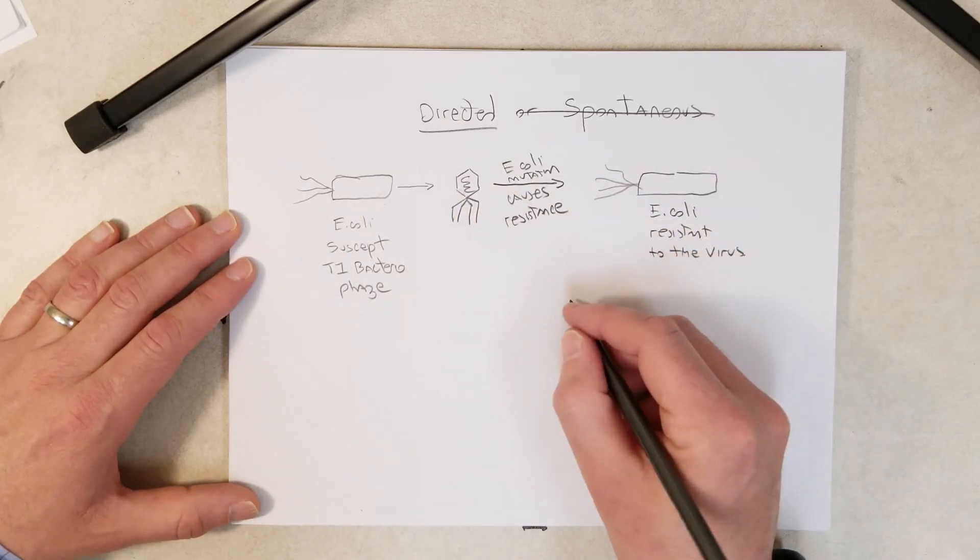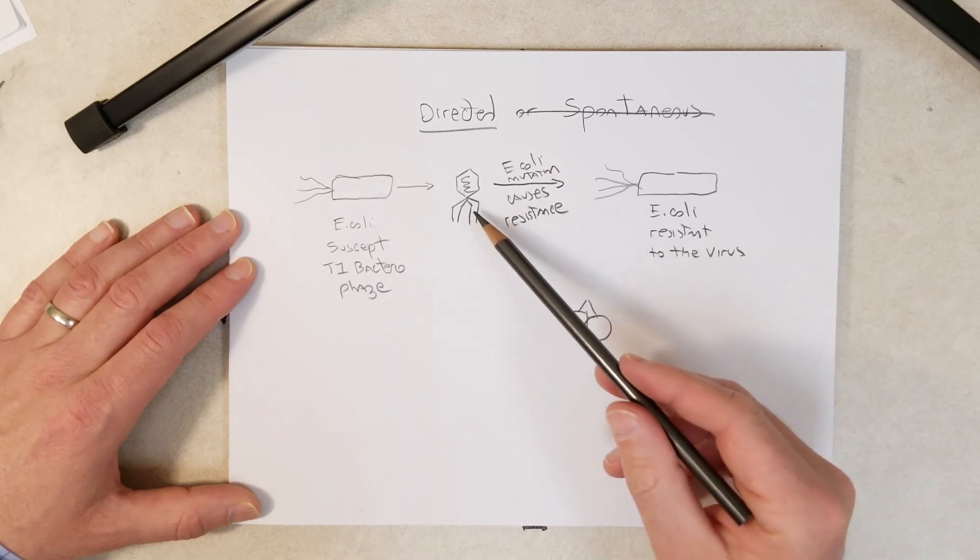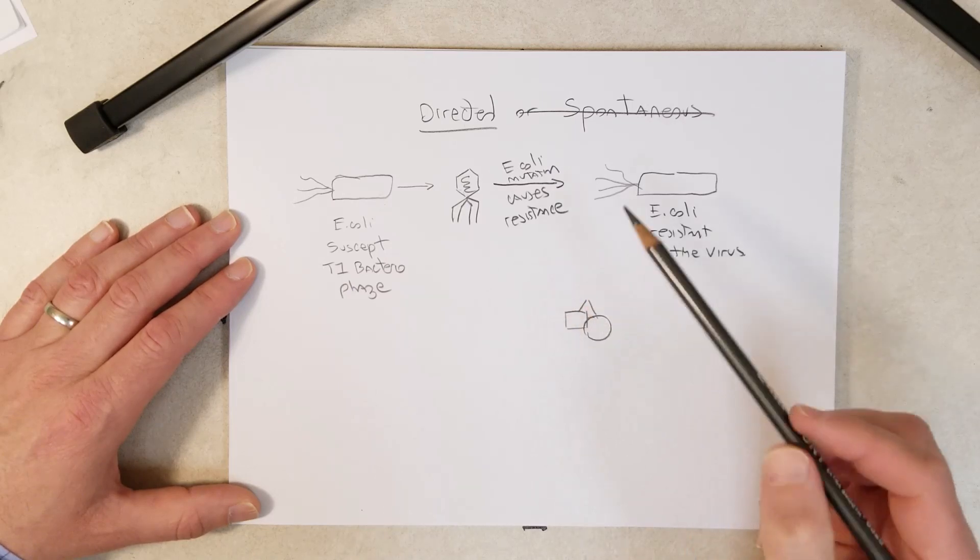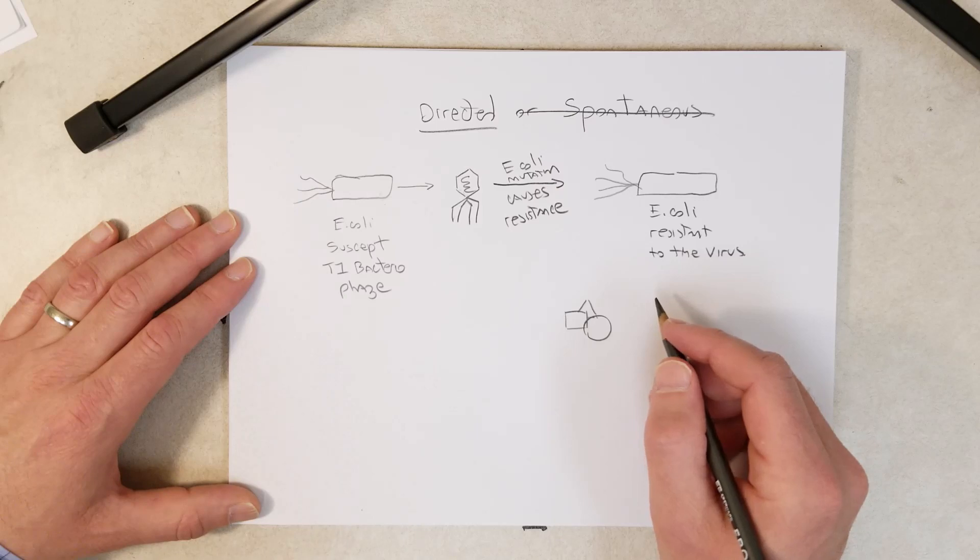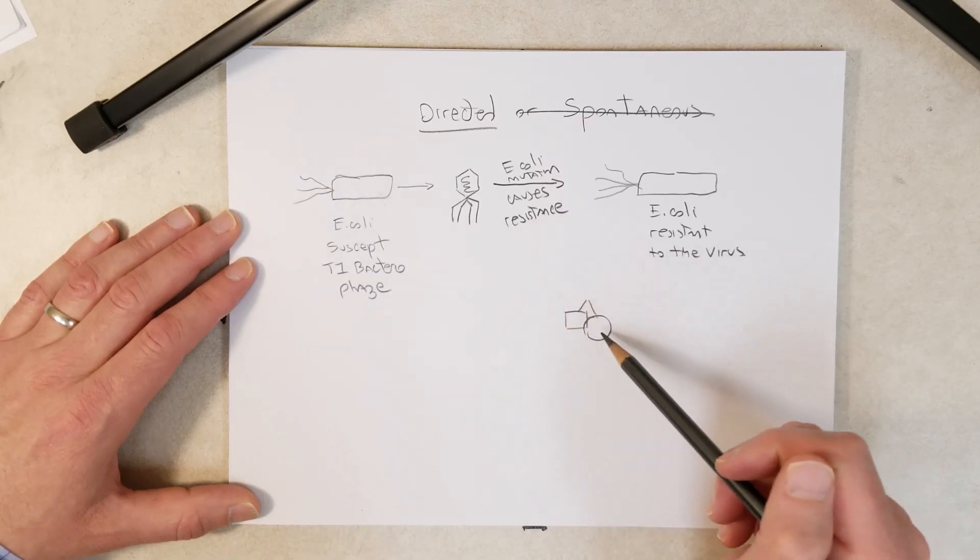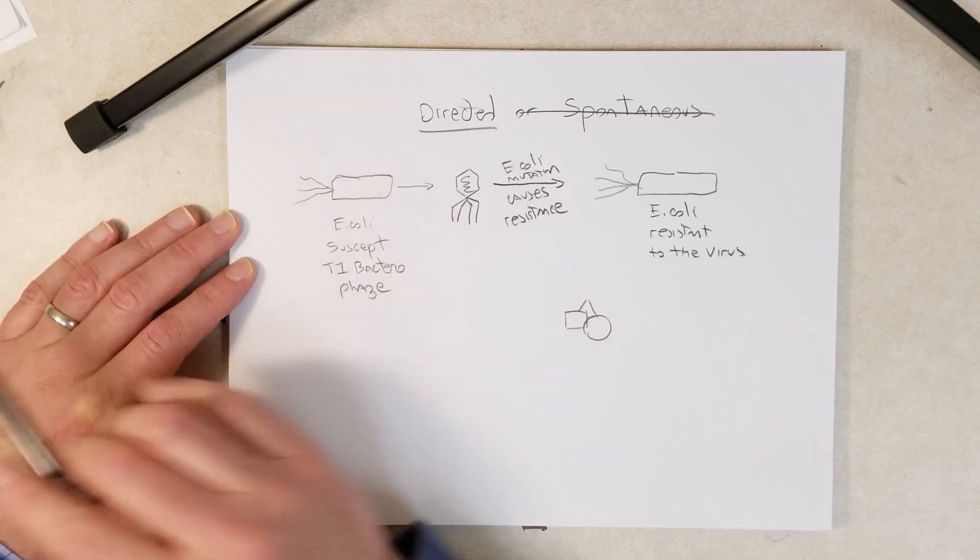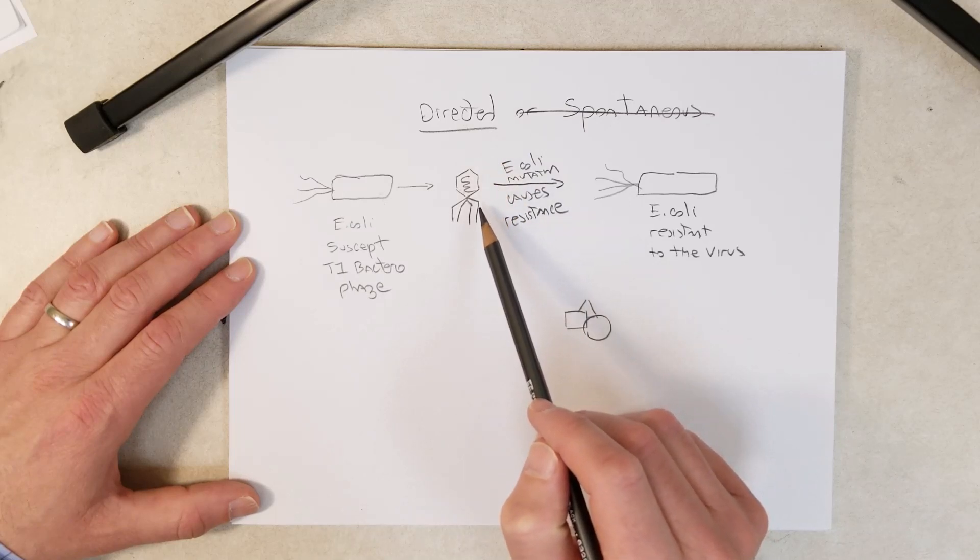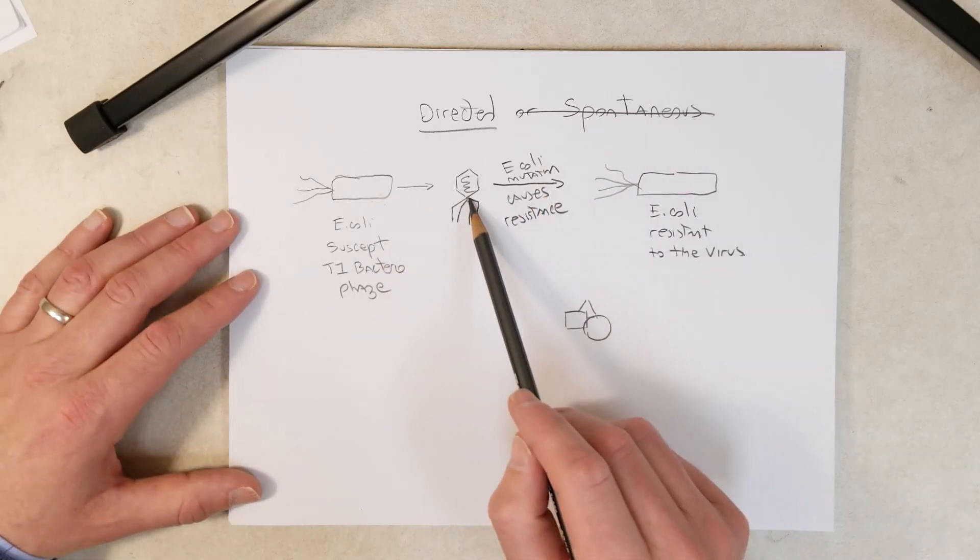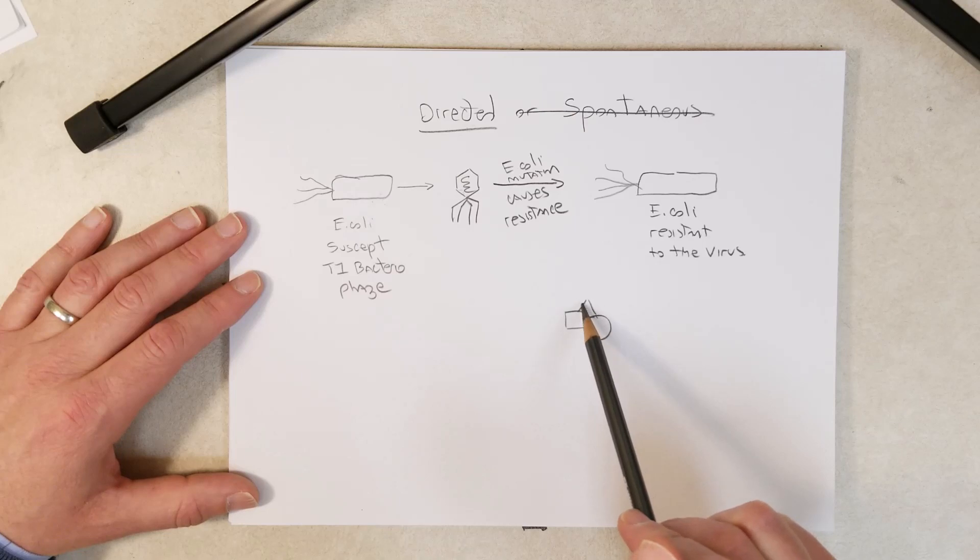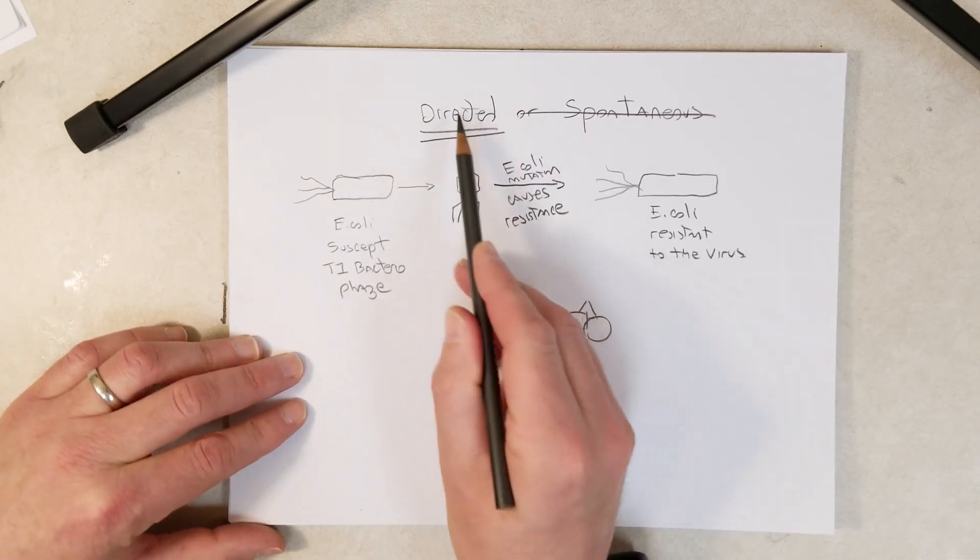This E. coli mutation causes resistance, so the cell survives infection. Now this E. coli cell is resistant to the virus. A directed mutation occurs as a result of coming into contact with something in the environment. How could that happen? One possibility is there could be a protein complex that senses the virus in the environment and targets certain genes inside E. coli, mutating those to allow resistance. If there's no virus present, no mutation would occur.